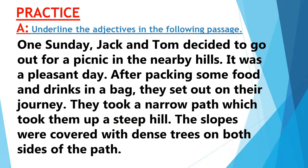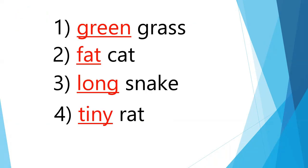The first one is grass — which adjective do we use here? Green. The second one is cat — which adjective do we use here? Fat cat — cat is a noun and fat is an adjective. The third one is blank snake — yes, long snake. And the last one is blank rat — yes, tiny rat. The solved exercise is given in your next slide.